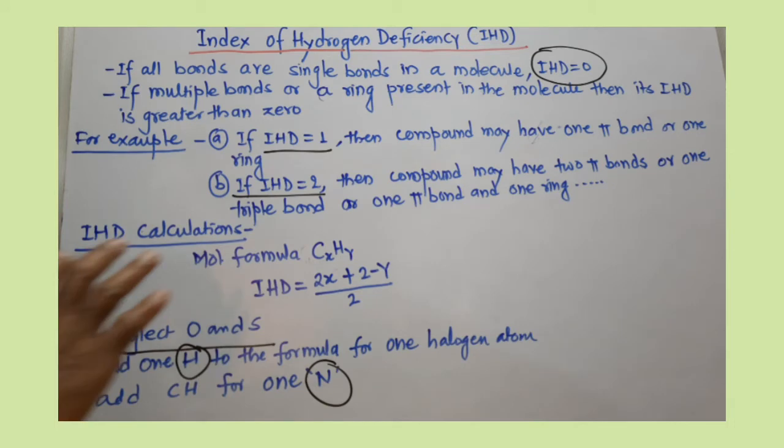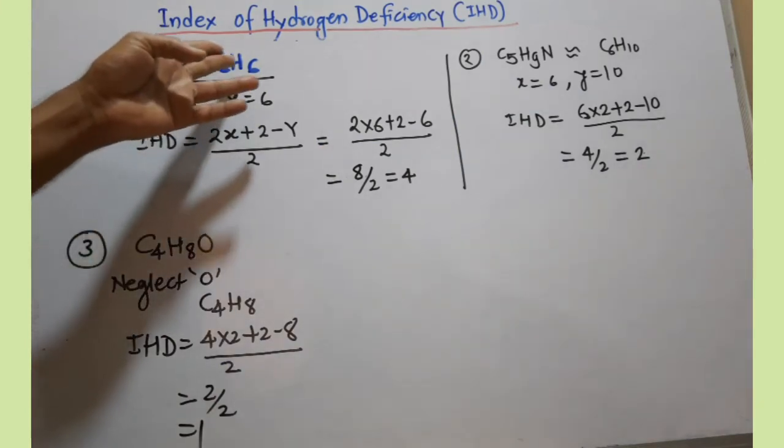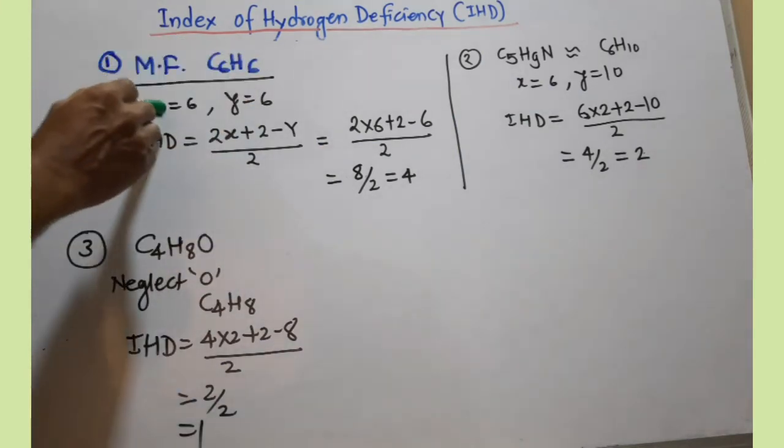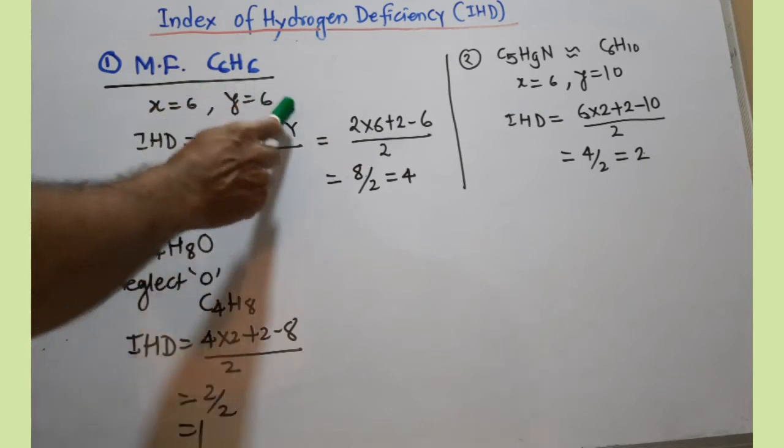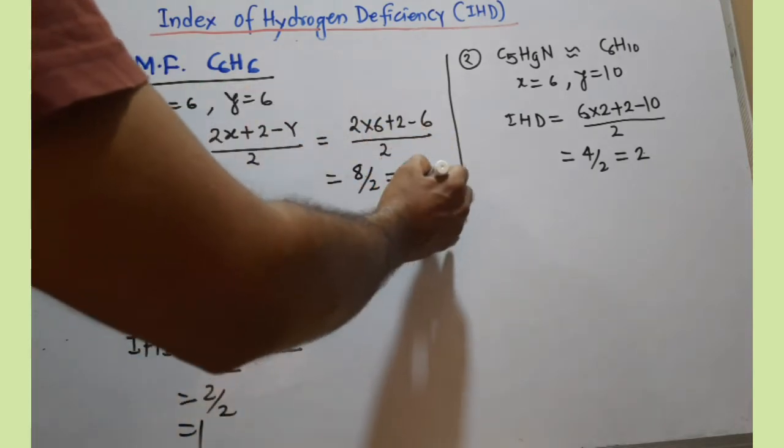This is all about how to calculate IHD from the given molecular formula. We will take a few examples to calculate IHD. First example, where the molecular formula is C6H6, where x value is six, y value is six. If you put those values in this formula, you get IHD four.